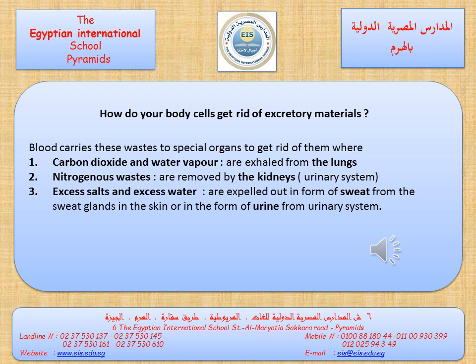The first type — carbon dioxide and water vapor — are exhaled from the lungs during the exhalation process. The second type — nitrogenous wastes — are removed by the kidneys, which are part of the urinary system. The third type — excess salts and excess water — are expelled from the body in two forms: first as sweat, expelled through special sweat glands found in the skin, and second as urine, which is expelled through the urinary system.